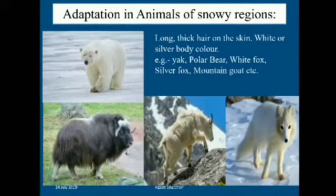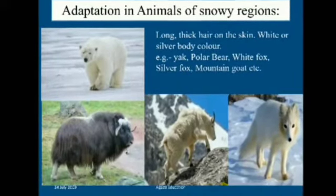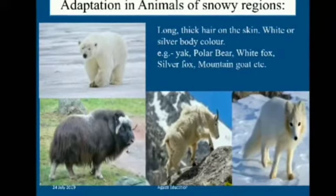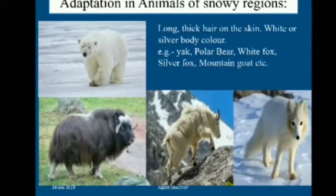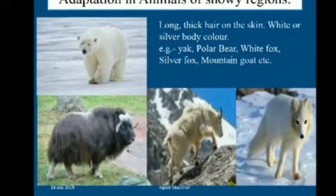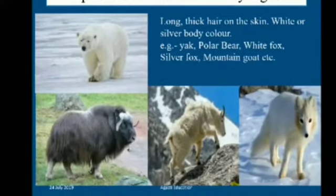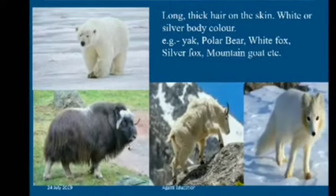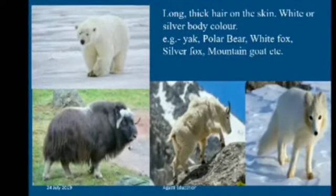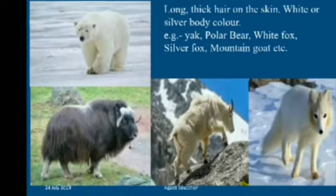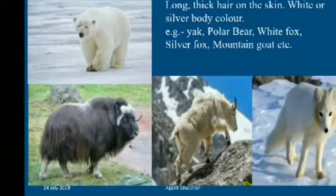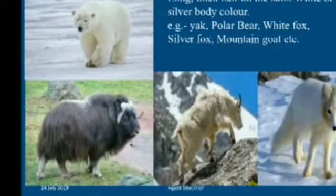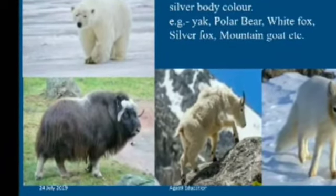Let us see adaptation in snowy region animals. Long and thick hair on the skin, white or silver body color. Examples include yak, polar bear, white fox, silver fox, mountain goat, etc. In the picture you can see different snowy region animals.